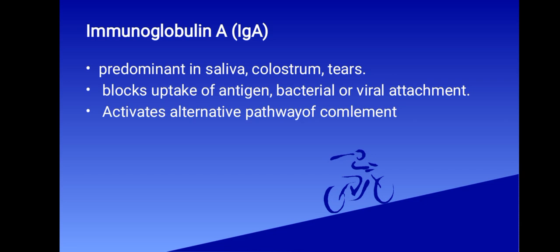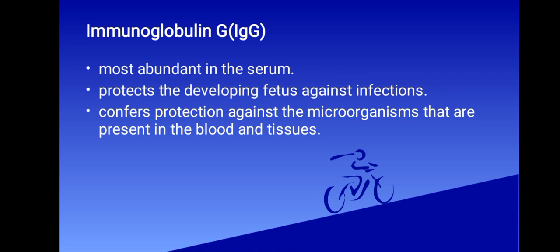Now we're going to look at immunoglobulin G. IgG is the most abundant class of immunoglobulins in the serum, comprising about 80 percent of the total serum immunoglobulin. There are four subclasses: IgG1, G2, G3, and G4. IgG is special because it is the only immunoglobulin with the ability to cross the placental barrier.